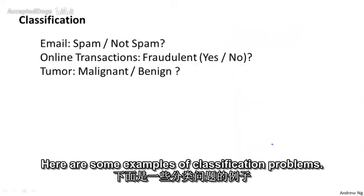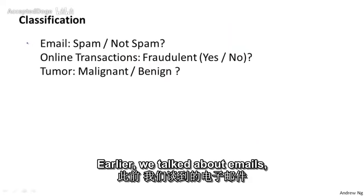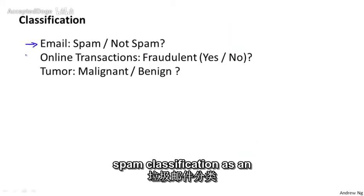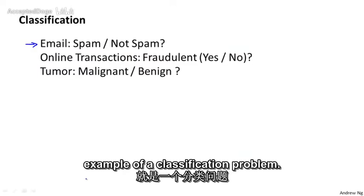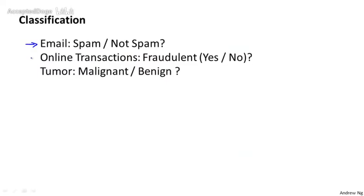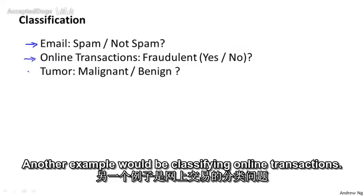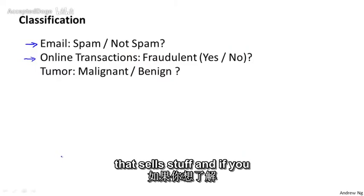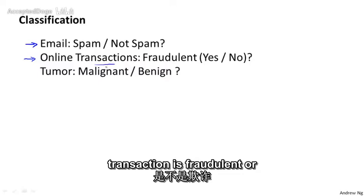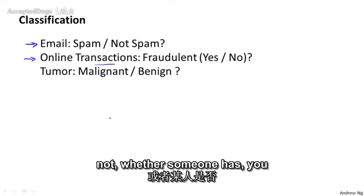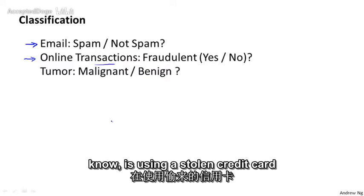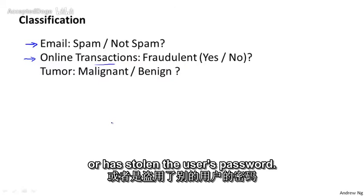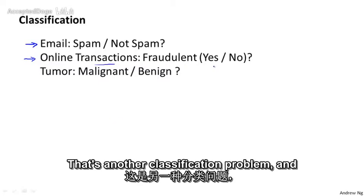Here are some examples of classification problems. Earlier we talked about email spam classification as an example. Another example would be classifying online transactions - if you have a website that sells stuff and want to know if a particular transaction is fraudulent or not, whether someone is using a stolen credit card or has stolen the user's password. That's another classification problem.